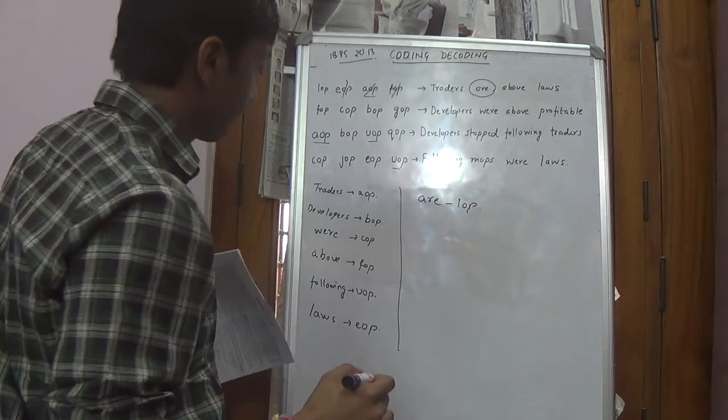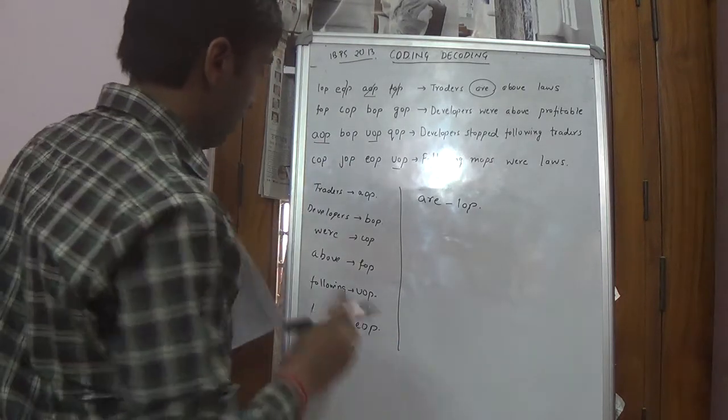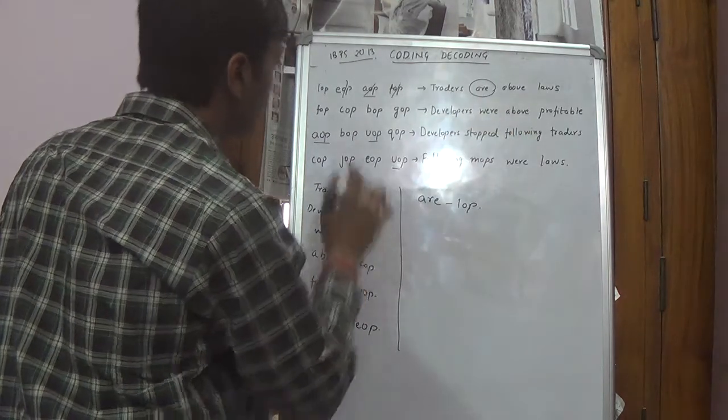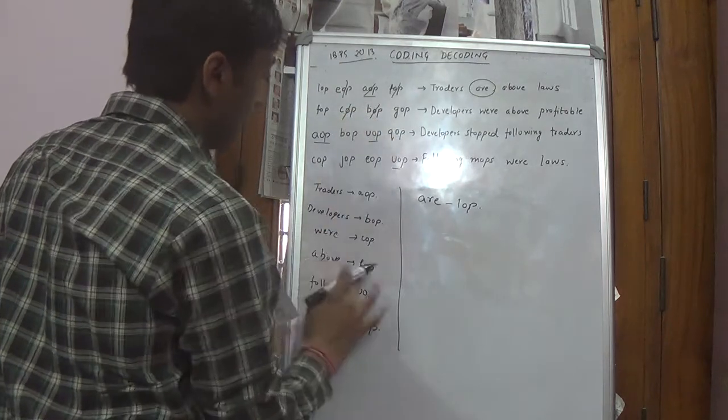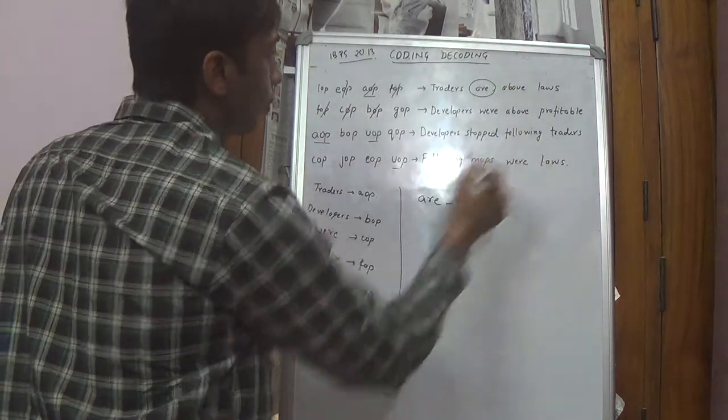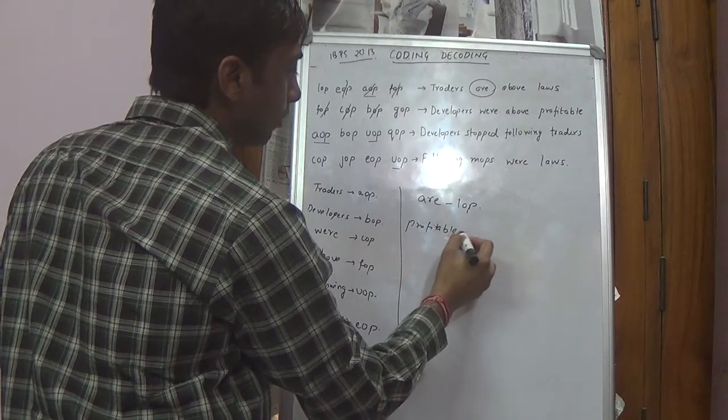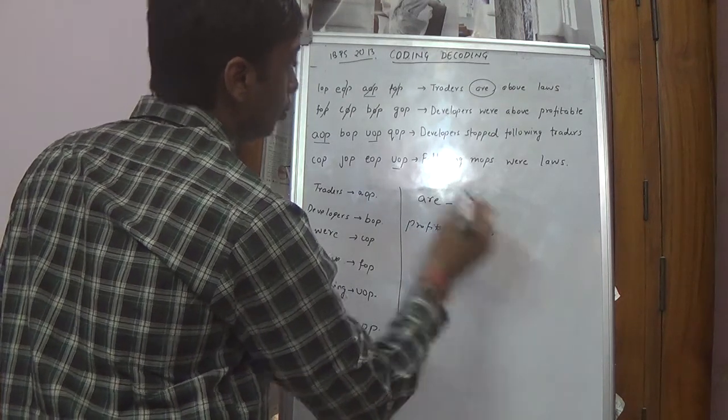Similarly, developers we have got, were we have got. Above we have got. Developers is BOP. Were is COP. Above is FOP. So profitable is GOP.